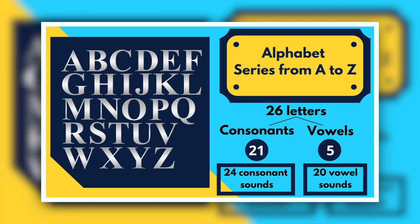In English, there's a series from A to Z, which is known as the alphabet. In that, there are 26 letters total — 21 of them are consonants, whereas 5 of them are vowels. But if I speak about the phonemic sounds, then they are 44 in number. Because from the 21 consonants, we get 24 consonant sounds, and from the 5 vowels, we get 20 vowel sounds.